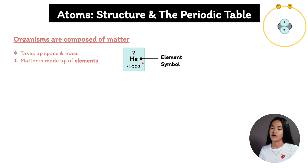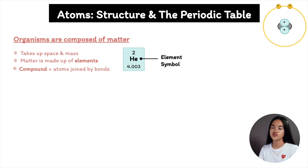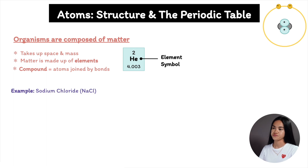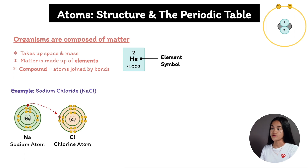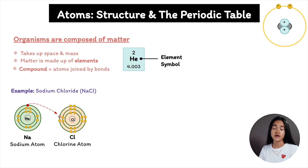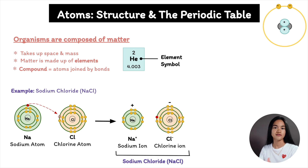Another important term is a compound, which is a substance consisting of two or more different elements combined in a fixed ratio. One example is table salt, sodium chloride. This compound is made of the elements sodium and chlorine in a one-to-one ratio. By themselves, sodium is a metal and pure chlorine is a poisonous gas, but if we combine the two together we get table salt.